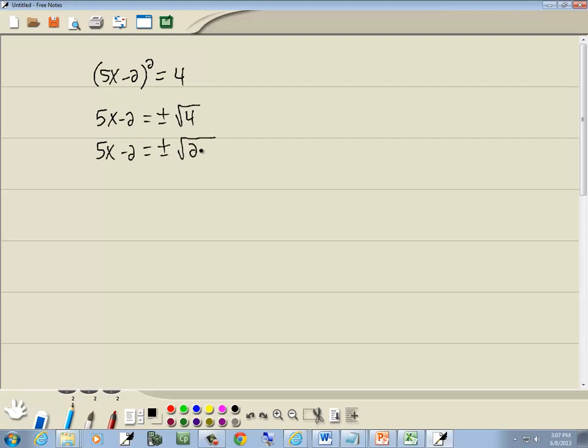4 is 2 times 2, and remember with the square root, we're looking for a pair of somethings. So here's a pair of 2s. They're going to come out in front as a single 2. So we've got 5x minus 2 is equal to plus or minus 2.